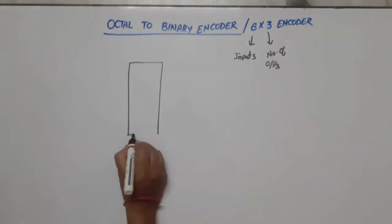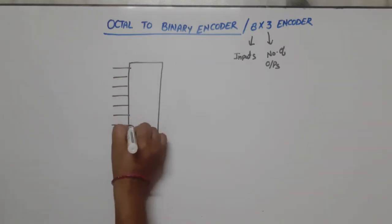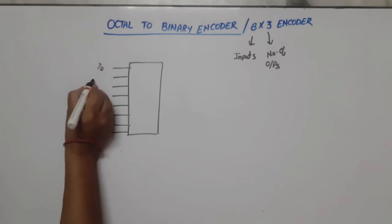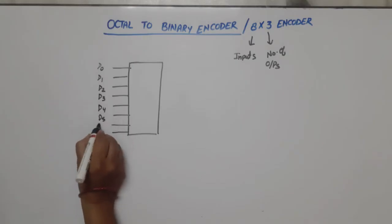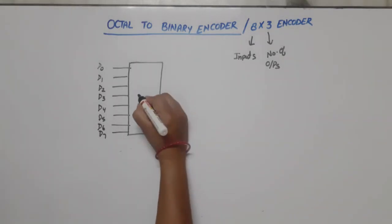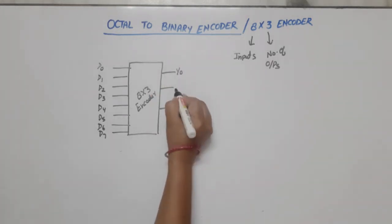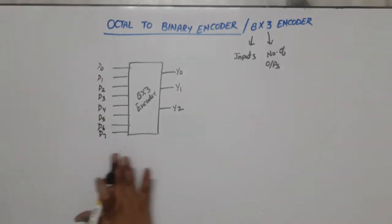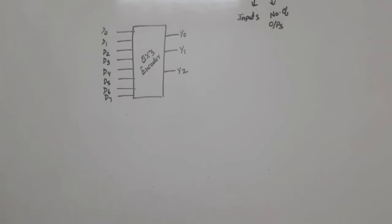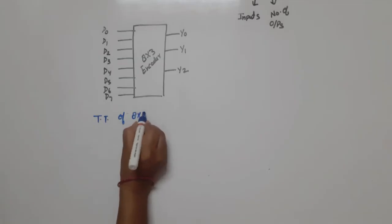This is our rectangle box. We will have 8 inputs: D0, D1, D2, D3, D4, D5, D6, D7 — labeled as an 8-to-3 encoder. We will have 3 outputs which are binary, written as Y0, Y1, Y2. These are the inputs and these are the outputs. This is the symbol. Now let's draw the truth table of the 8-to-3 encoder.